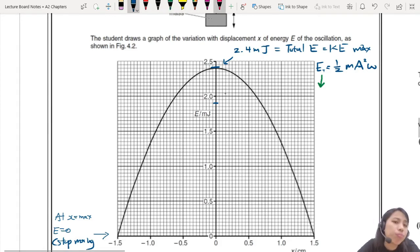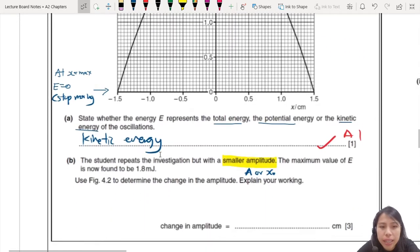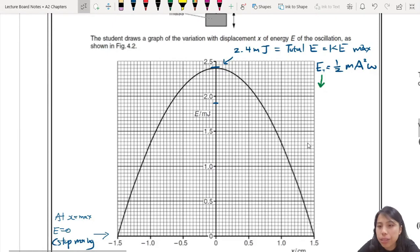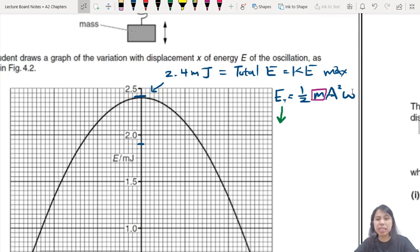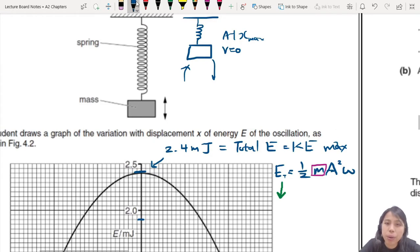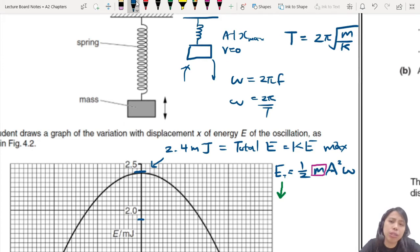This is where you kind of have to think a little bit. Mass. Is mass changing? Did we change this mass? No, they didn't say that. They didn't say they changed the mass. Mass is still constant. How about frequency omega? Angular frequency. Is the angular frequency still the same? Or is it smaller, bigger? How do you know? So you remember a bit. What is omega? Omega is 2 pi f. Or you can say omega is 2 pi over T.